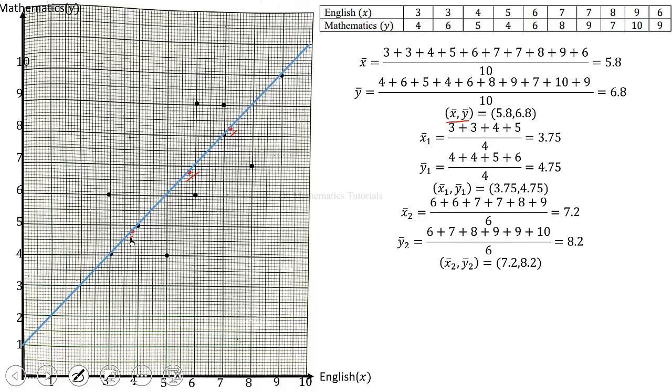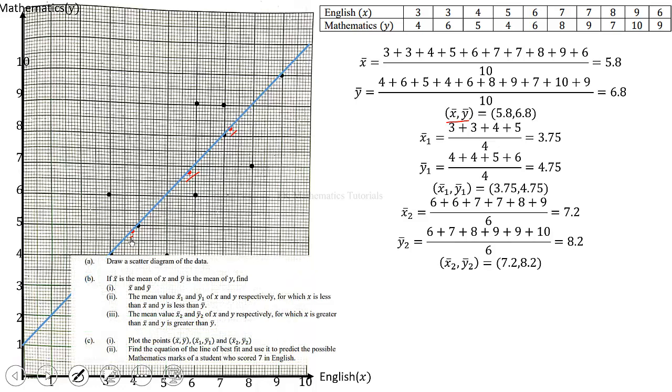So we have to find the equation of the line of best fit and use it to predict the possible mathematics marks of a student who scored 7 in English. So we pick the points, we pick these points over here and this point, to find the equation of the line of best fit.